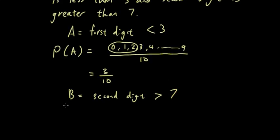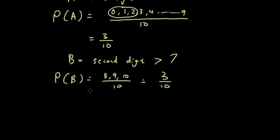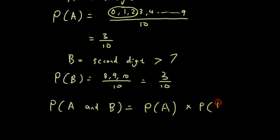So what's that? Probability of B is there's 8, 9, and 10 out of 10 digits. So that's 3 out of 10. So then the answer for that is probability of A and B both occurring is probability of A times probability of B. So that's 3 out of 10 times 3 out of 10, which is 9 out of 10.